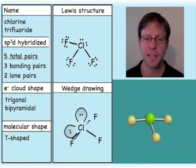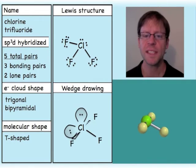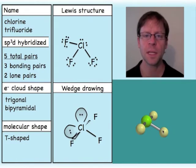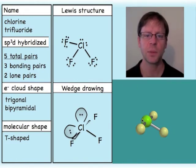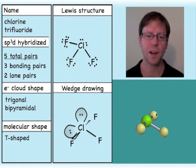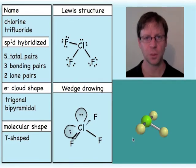Just to show an alternative drawing: if you wanted both lone pairs in the plane of the page, you'd have one atom in the plane, the central atom in the plane, then a lone pair going up and one going down — with a dashed wedge going behind and a solid wedge coming out for the remaining fluorines.